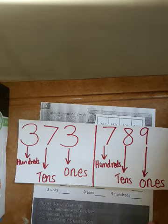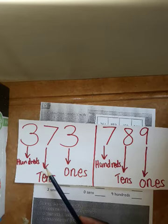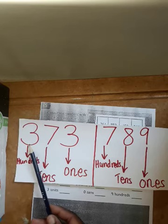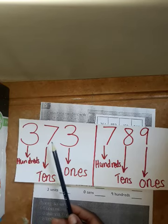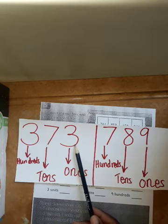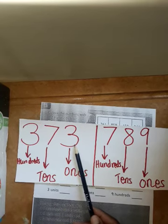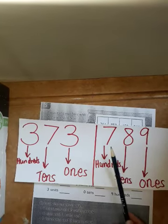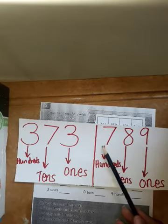...tens, then ones. So take note of every value. That means this is three hundreds, while this is seven tens which is 70, while this is three ones which is three. Take note of that.